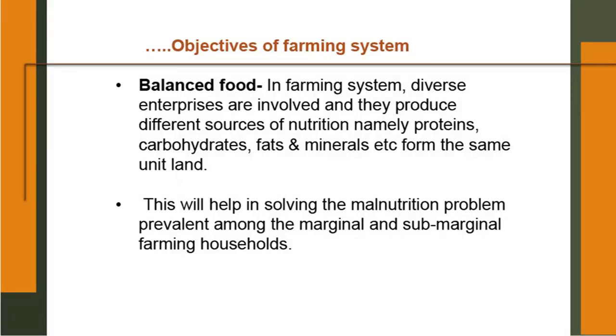Balanced food: here diversification is the key in integrated farming system. Diverse enterprises produce different sources of nutrition — namely proteins, carbohydrates, fats and minerals, etcetera — from the same unit of land. In this case, certain malnutrition can be avoided. Some people eat only rice and fish, some eat only wheat — under those conditions you get malnutrition. But in integrated farming system where you have some animal products, fruits, vegetables, a variety of crops, milk, honey, so many things are there. Even children, if they take small parts of these things, they will not suffer from malnutrition.